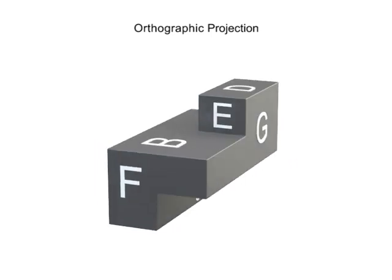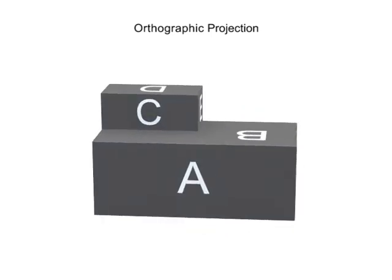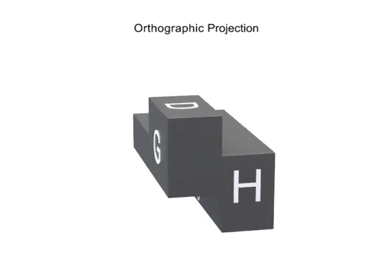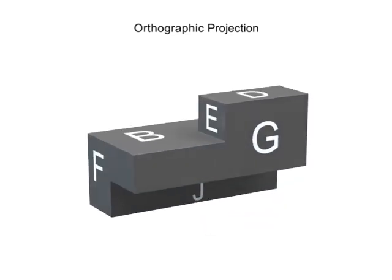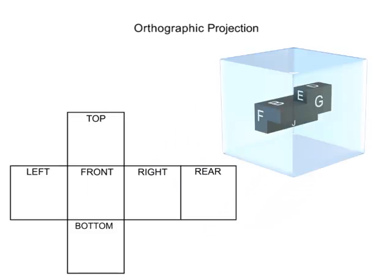Complex parts show much more detail on each view, but can ultimately still be illustrated in the same way. As with a simple part, imagine the complex part in a glass box. Each side projects an image onto the wall of the box. This image becomes one view.